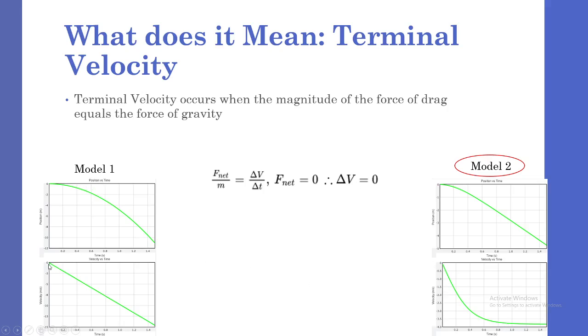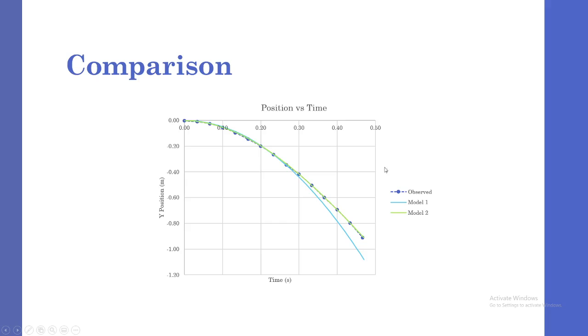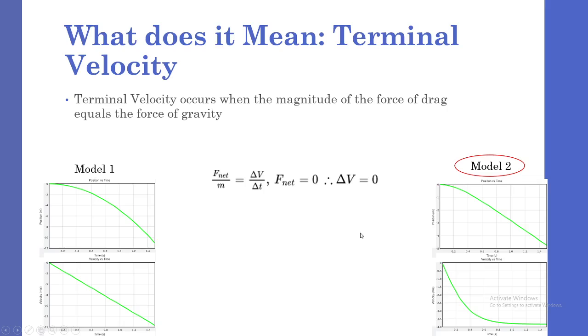However, in model one, we see that velocity has a consistent negative downward slope. This shows that this is the reason why model two shows a much more accurate representation of the motion of the object when compared to model one.